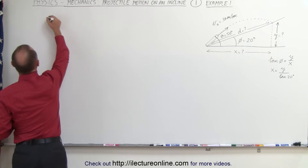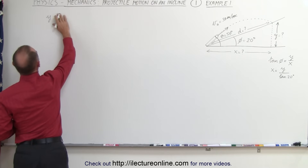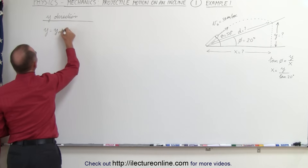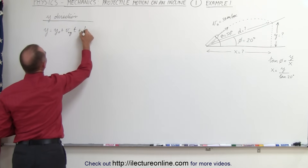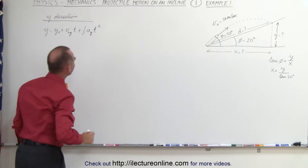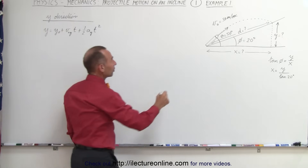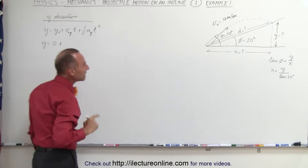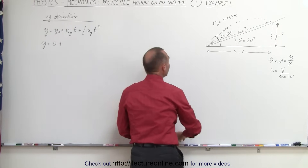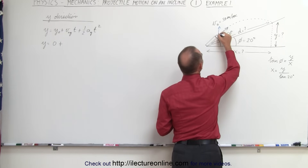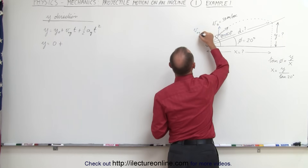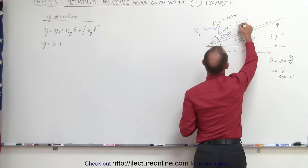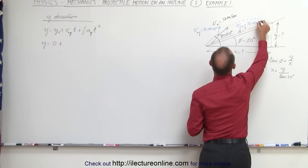We're going to work in the y direction first. The equation for the y direction is: y equals y-naught plus v-initial-y times t plus one-half times acceleration-y times t-squared. Assuming we start on the ground, initial height is 0. We need the x and y components of our initial velocity. V-initial-y equals 30 times the sine of 50 degrees.